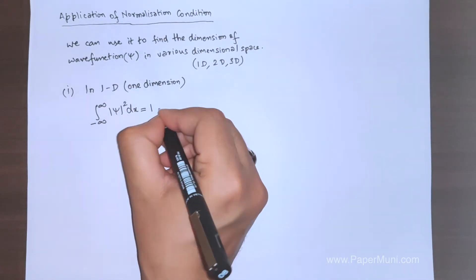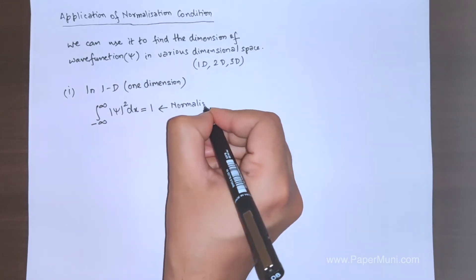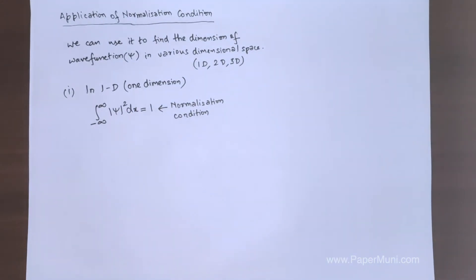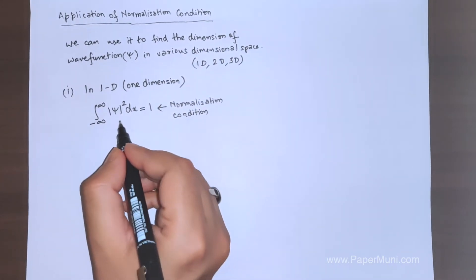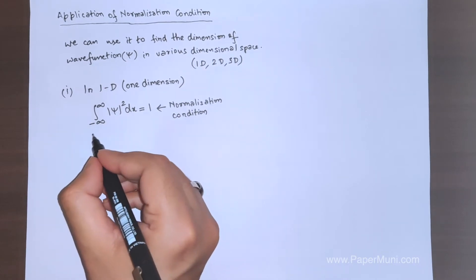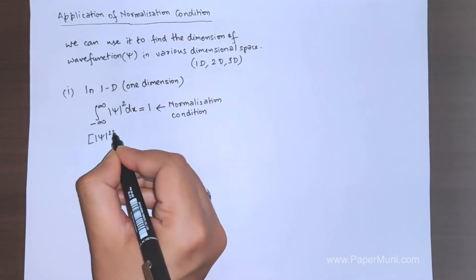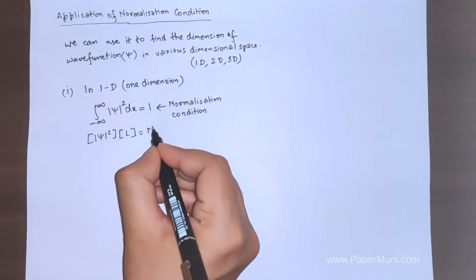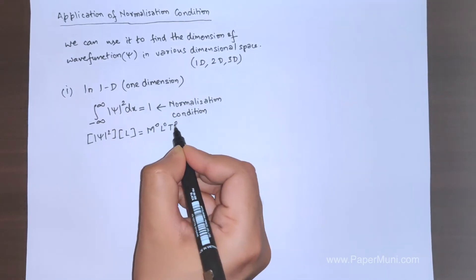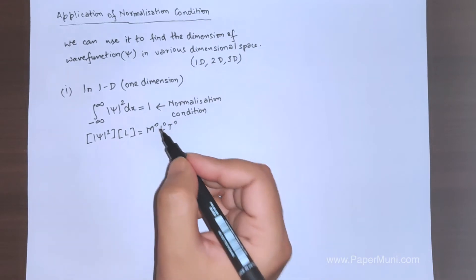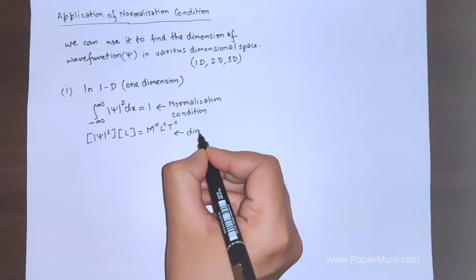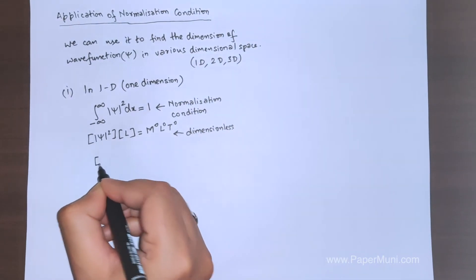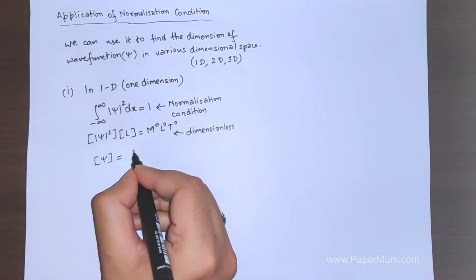The normalization condition in 1D is given here. If we write down the dimensions of each side: the line element dx has a dimension of length L, and the right-hand side is dimensionless — we can write it as M^0 L^0 T^0, where M is mass, L is length, and T is time.